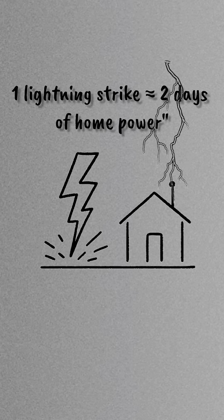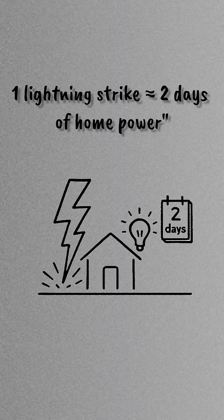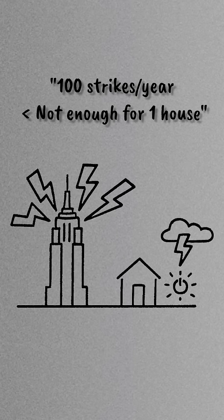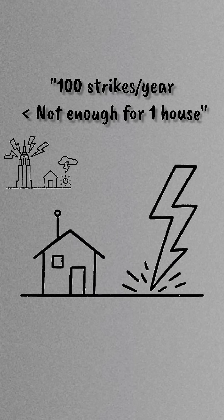A typical lightning strike delivers enough energy to power a residential house for about two days. That means that even the Empire State Building, which is struck by lightning about 100 times a year, wouldn't be able to keep a house running on lightning power alone.